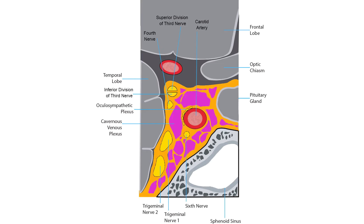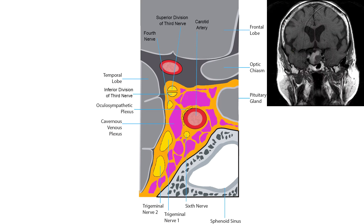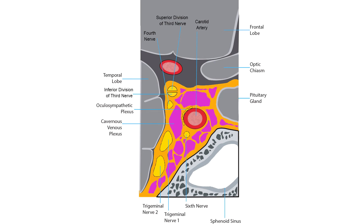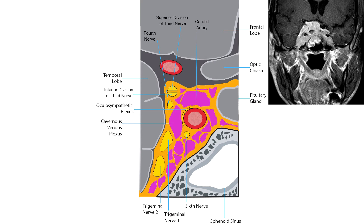Here is an example demonstrating that finding. The cavernous third nerve segment can also be acutely and dramatically compressed by an expanding hemorrhagic pituitary adenoma — a condition called pituitary apoplexy. Cavernous carotid aneurysms, carotid cavernous fistulas, idiopathic inflammation, metastatic tumors, and meningiomas can also damage the nerve in this location.